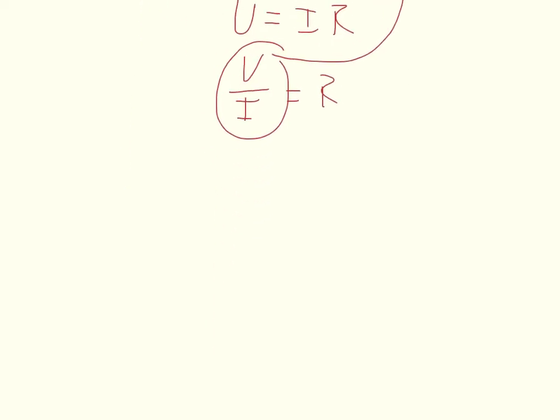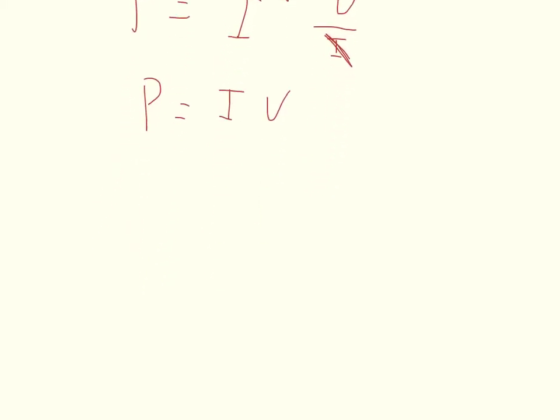Then we plug this in right here. And so what we get is that P is equal to I squared times V over I. And that cancels one of these out, and I get P is equal to I times V.